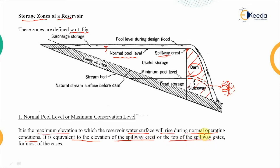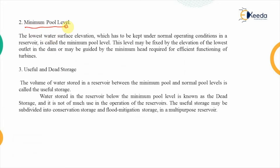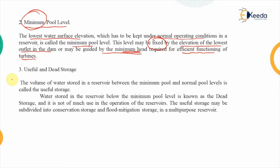The normal pool level is equivalent to the elevation of the spillway crest or the top of the spillway gate. The next one is the minimum pool level. As the name suggests, it is the lowest water surface elevation which must be maintained under normal operating conditions in a reservoir — even if the river is not recharging it. It is fixed by the elevation of the lowest outlet in the dam.